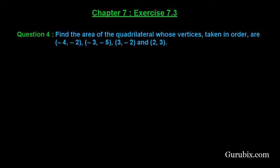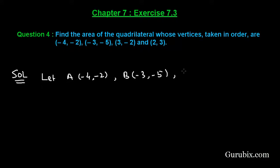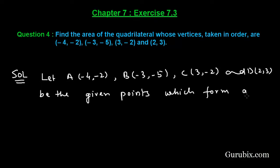Welcome friends. Let us solve question number 4 of exercise 7.3 of chapter 7. The question says: find the area of the quadrilateral whose vertices taken in order are minus 4 comma minus 2, minus 3 comma minus 5, 3 comma minus 2, and 2 comma 3. Let A be (−4, −2), B be (−3, −5), C be (3, −2), and D be (2, 3) — the given points which form a quadrilateral ABCD.